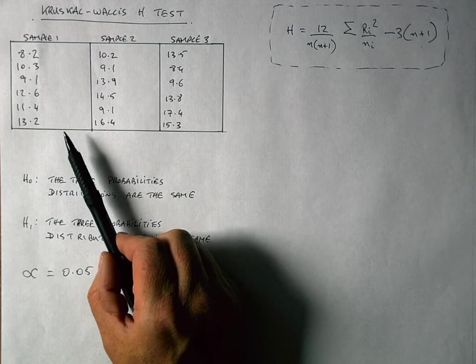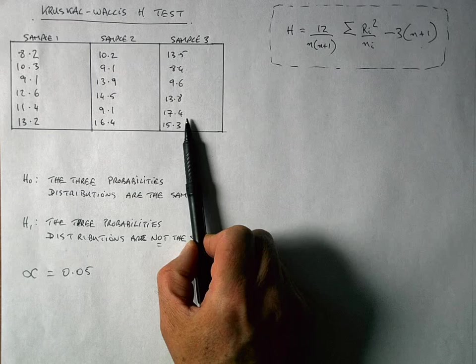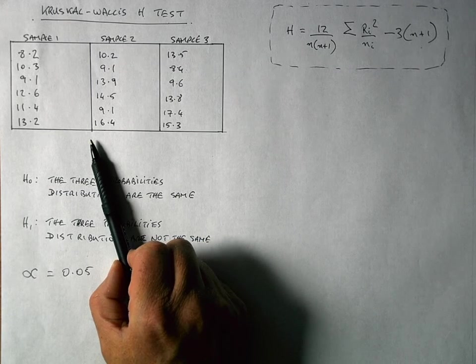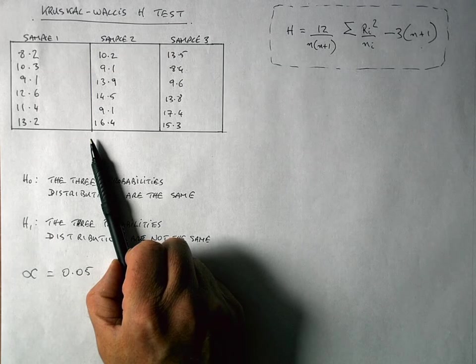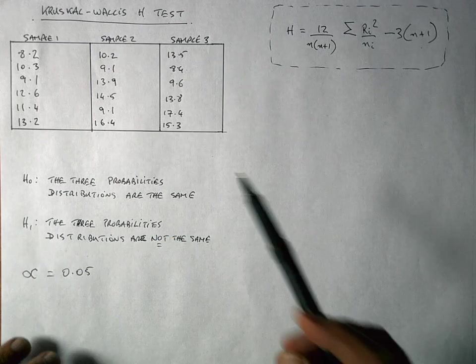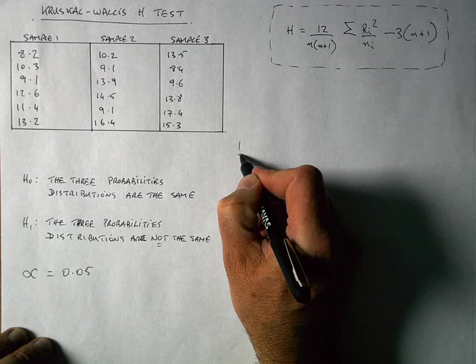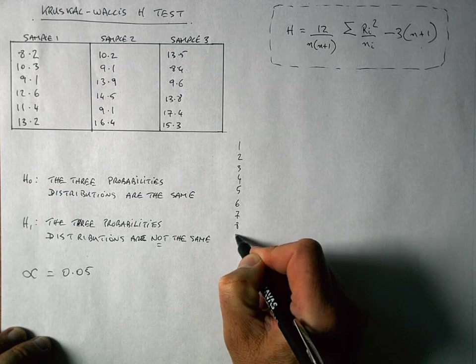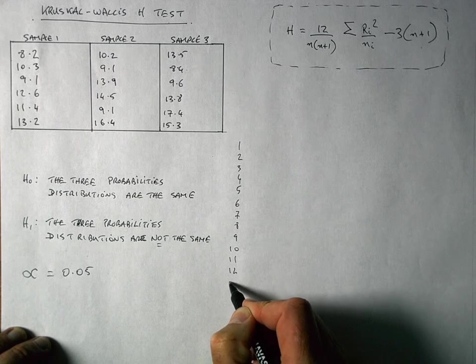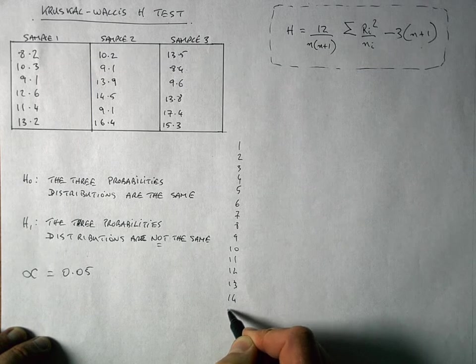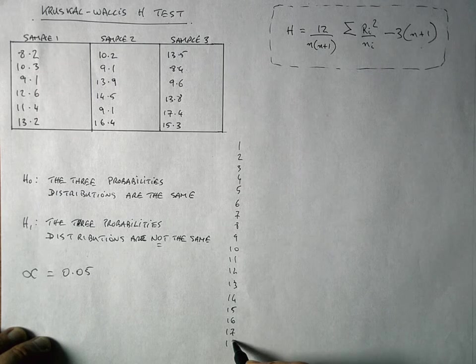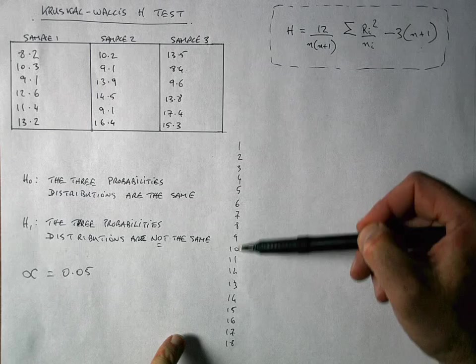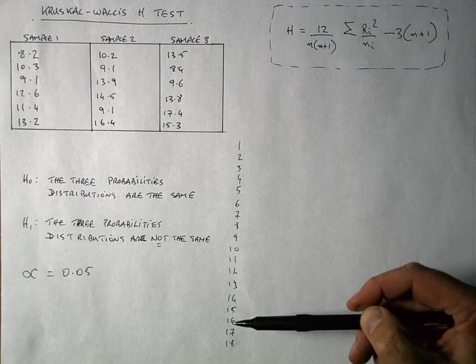Now the good news about a Kruskal-Wallis test is the data that are here, you don't actually do anything with it at all. You're not going to calculate the mean or standard deviation or variance or range or anything like that. But we do need to rank these data from the smallest to the largest. So my first job here is, I'm going to do this here, is to write out from 1 to 18 the numbers, to represent the ranks of each of my data here. So you could do this in Excel or on paper like I'm doing it here. So I've got 18 values here. And I'm going to rank each of these numbers here so that they match up with a rank from the smallest to the largest.